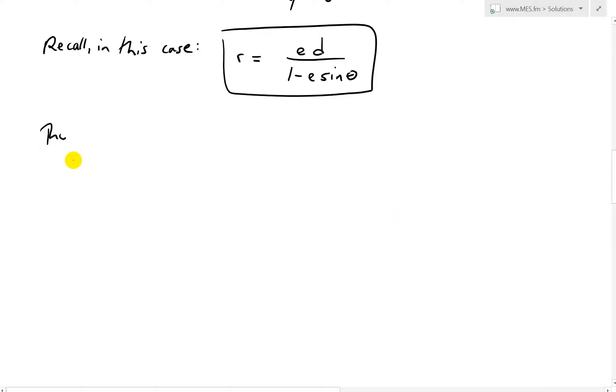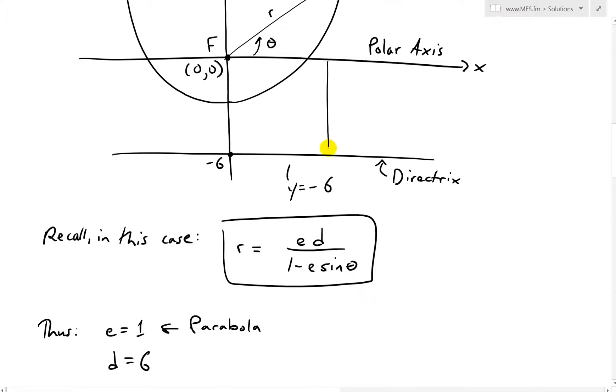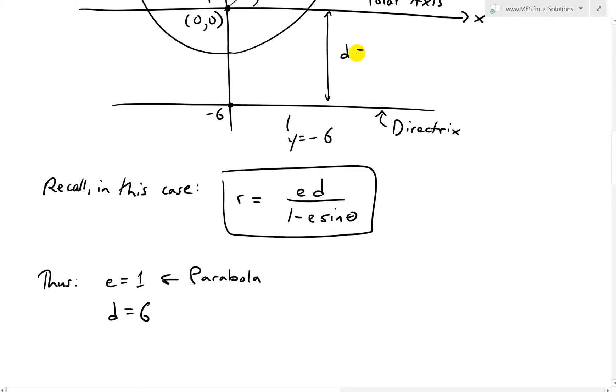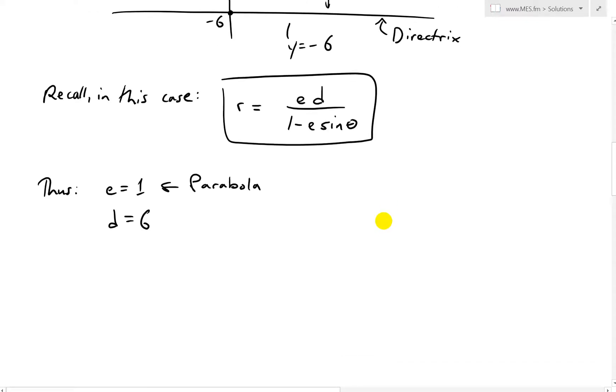And thus, in our case, what we have is, thus for a parabola, we have, yeah, so that's a parabola, e equals 1. This is for a parabola. So the parabola is e equals 1 based on unified theorem. And then we also have, in this case, d is equal to 6. And then the y equals to, yeah, so this distance across here to the directrix from the focus is going to be d. So in this case, d is going to be equal to 6. It's the absolute value of the distance from there to the directrix.